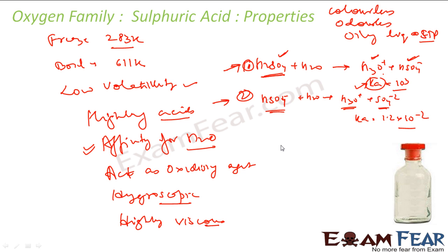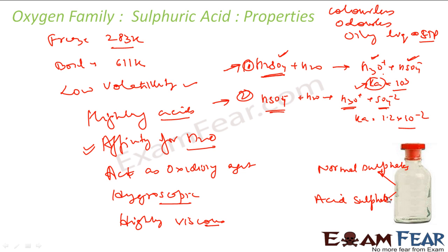When talking about salt formation, H₂SO₄ forms two types of sulfates. First, the normal sulfates — for example, Na₂SO₄, CuSO₄, and similar compounds. Second, acid sulfates — for example, NaHSO₄. These are the two types of sulfates it forms.